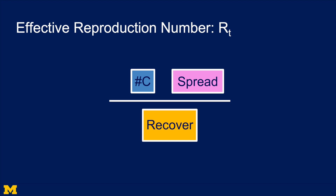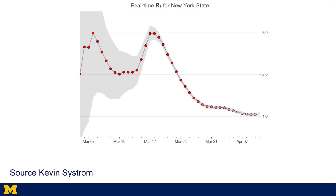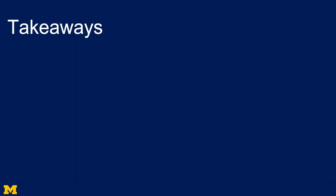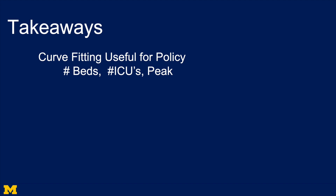Remember, we had the basic reproduction number R0 — that's contacts times spread over recovery — which drives the red curve. What drives the blue curve is the effective reproduction number: are we lowering the number of contacts, reducing the spread? You can estimate RT, the real-time effective reproduction number. Looking at New York — this is work by Kevin Seistrom — it's gone down in the last few weeks of March and early April, from a level of almost three to one. As it goes below one, you're going to stop the spread of the disease.